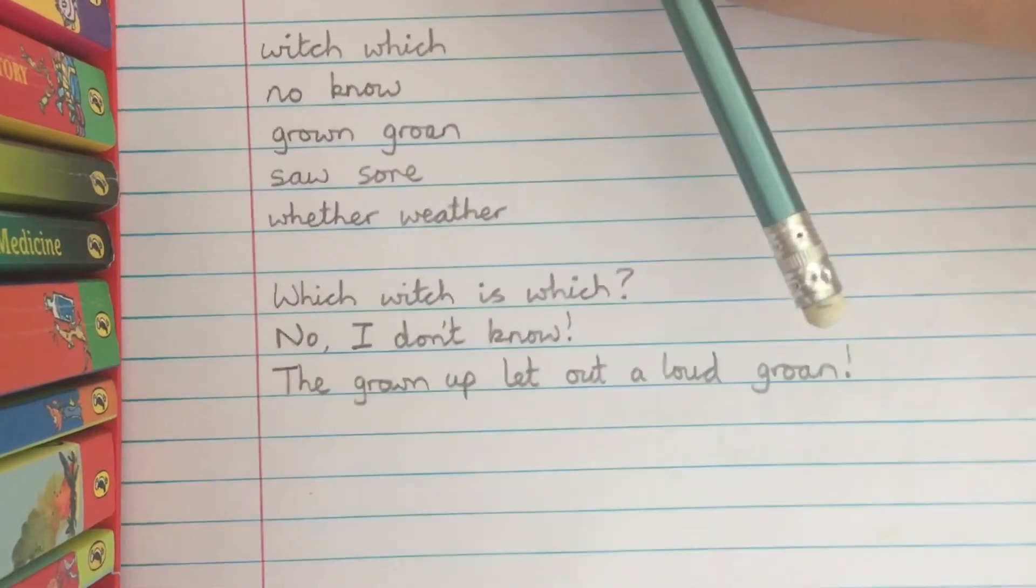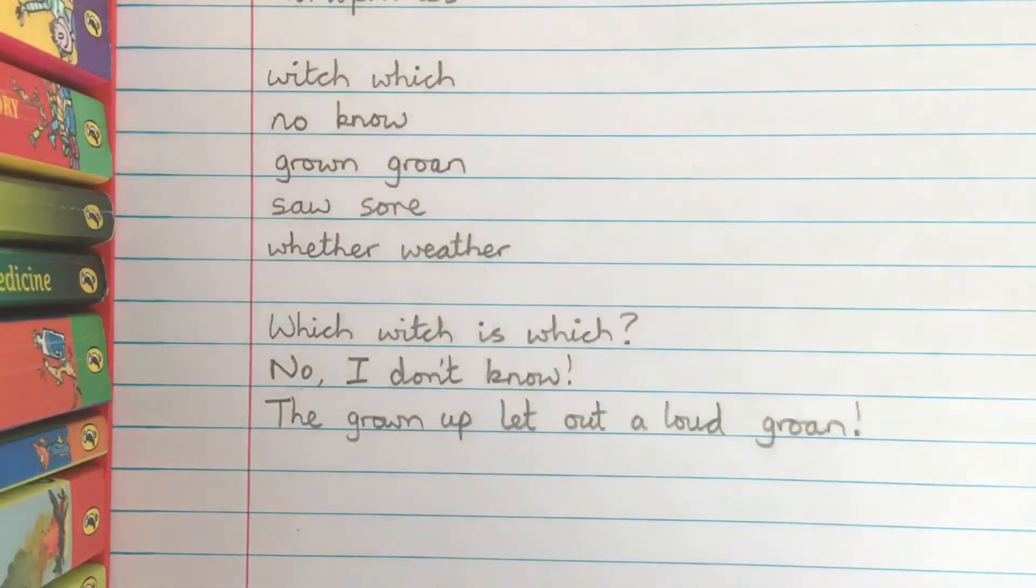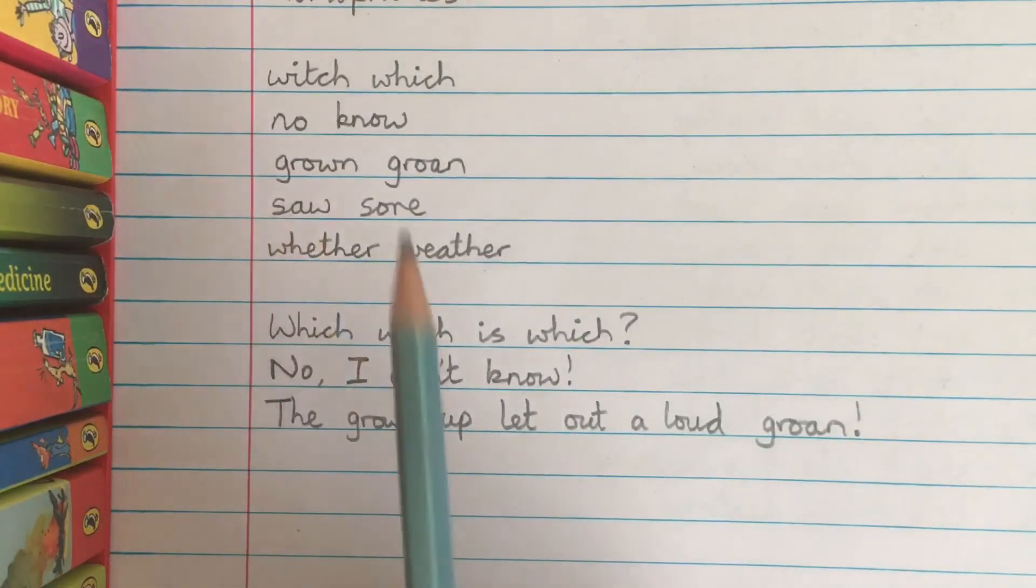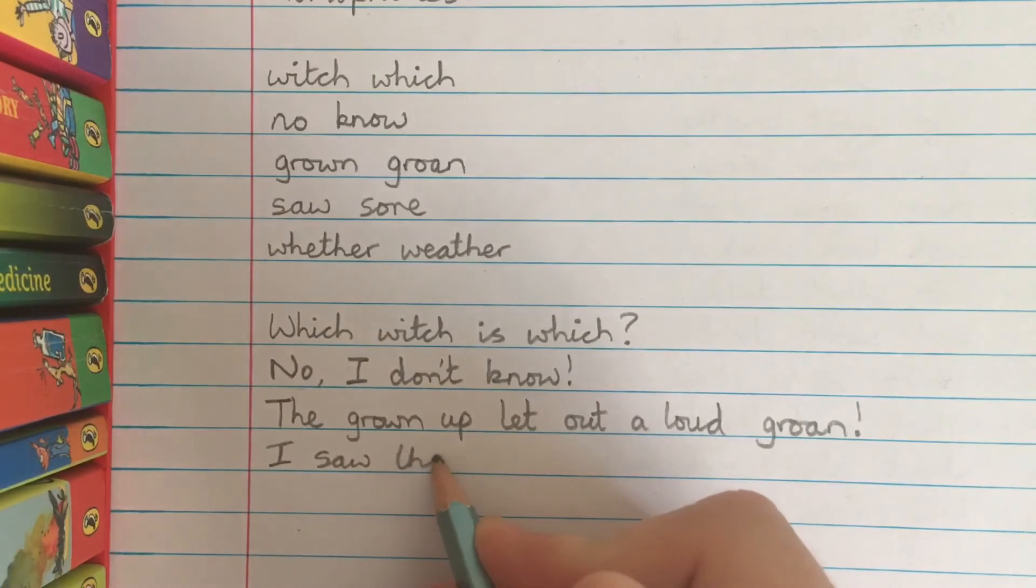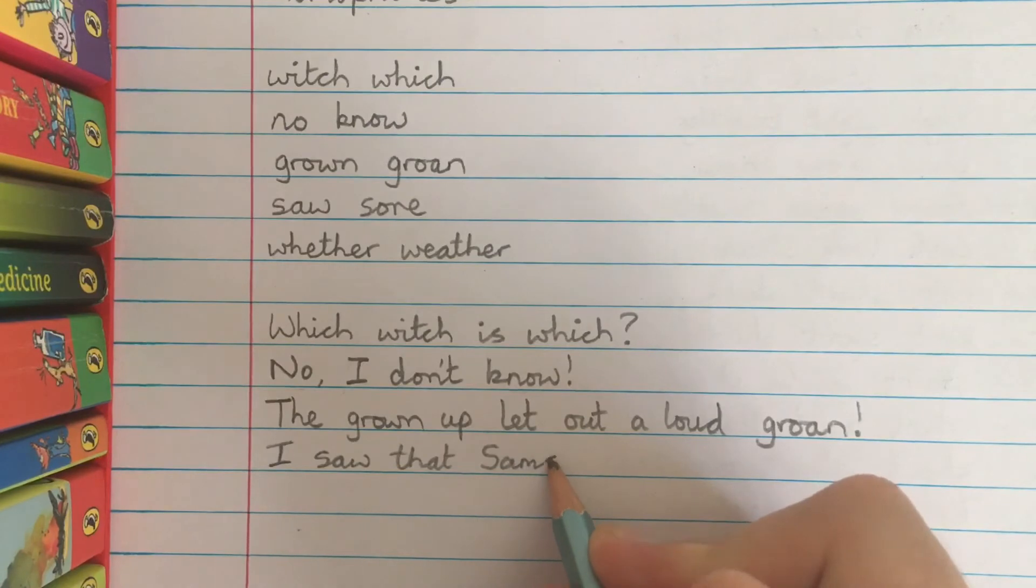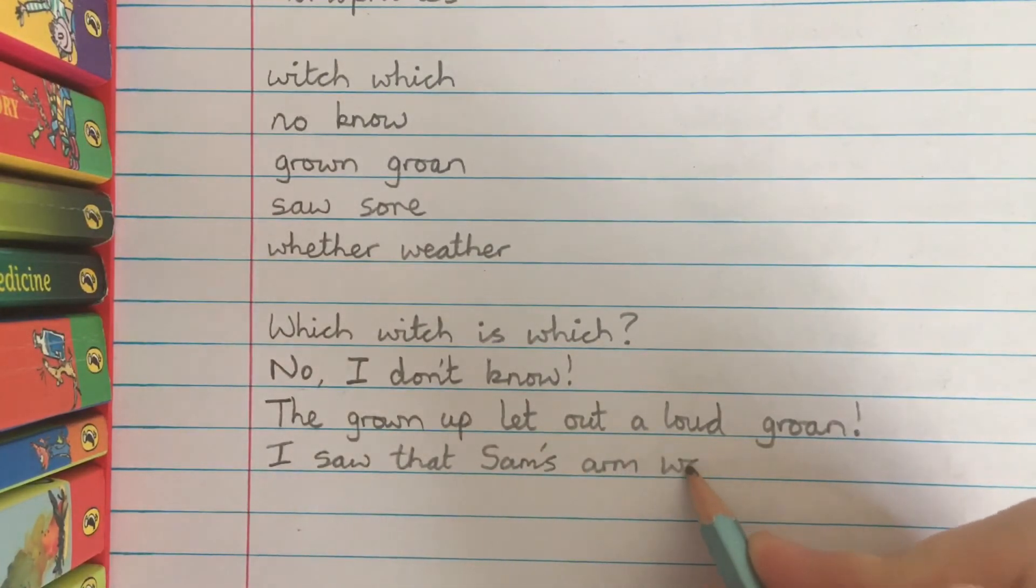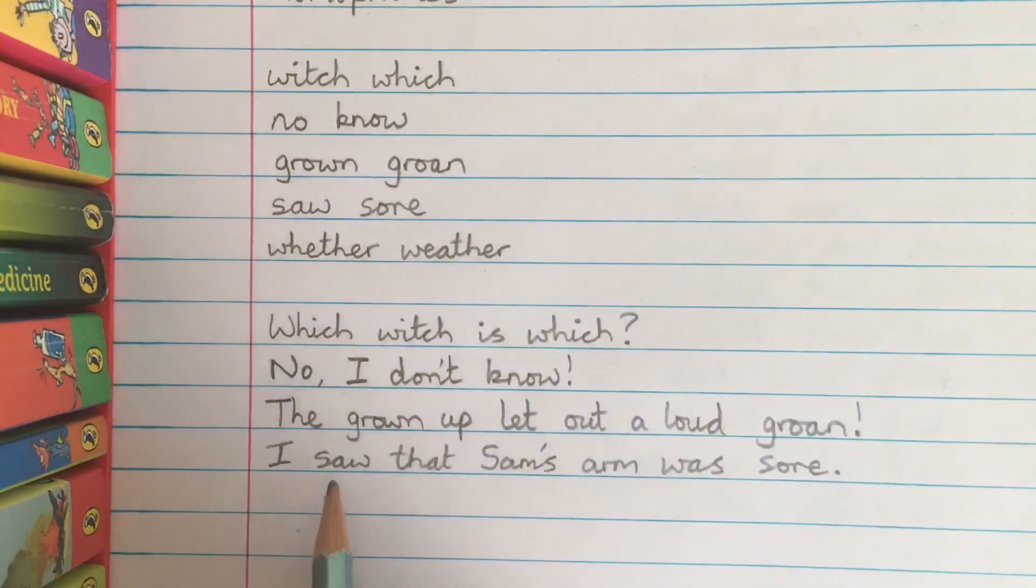Let's have a go at the last two. We'll start off with saw and sore. I saw that Sam's arm was sore. This one is to do with seeing and this one is to do with it being hurt. I saw that Sam's arm was sore. Last one now, weather and whether.